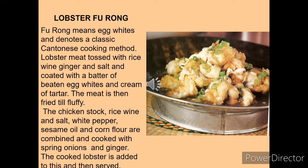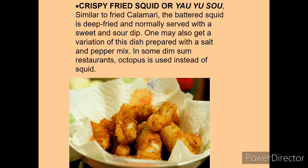Lobster foo rong — 'foo rong' means egg white — denotes a classic cooking method. Lobster meat is topped with rice wine vinegar and salt, coated with a batter of beaten egg whites and cream of tartar, then fried until fluffy. Chicken stock, rice wine, salt, white pepper and other ingredients are combined and cooked with onion and ginger. The cooked lobster is added at last, tossed, and served. Crispy fried squid is similar to fried calamari — squid is dipped into batter, deep fried, and served with sauce.